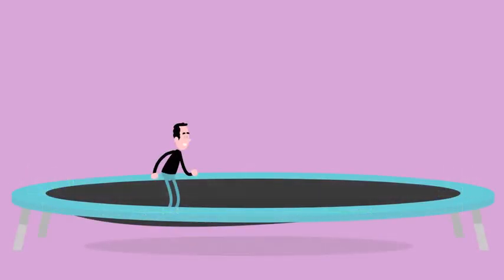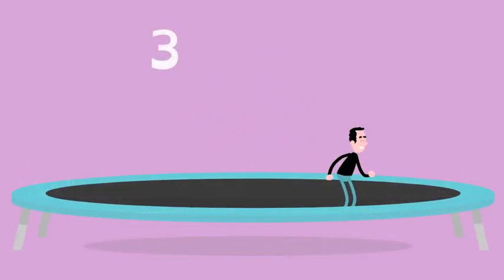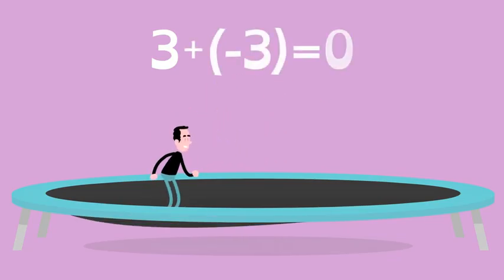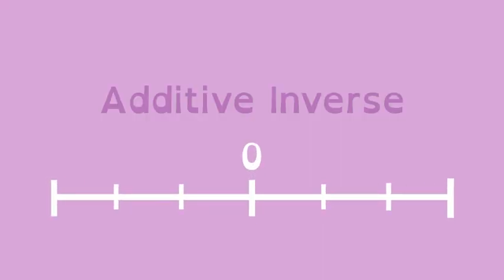You can use it to describe opposites. If you did a front flip on a trampoline, and then did an additive inverse back flip, then you'd be right where you started. That's additive inverse, a number that is the same distance from zero on the number line, but in the opposite direction.